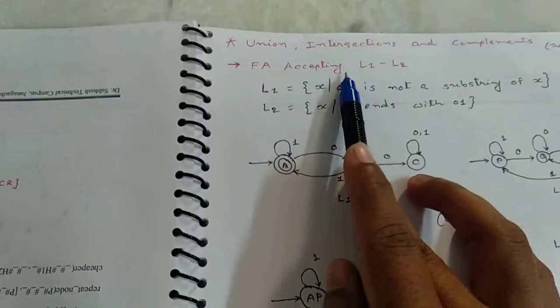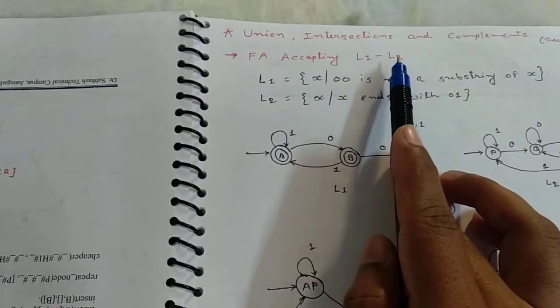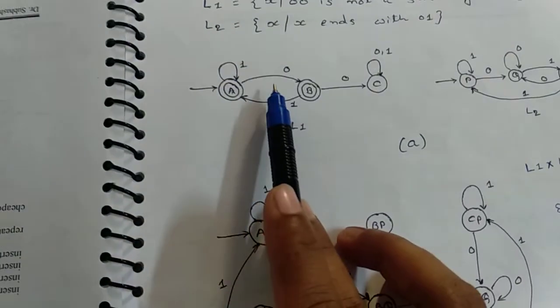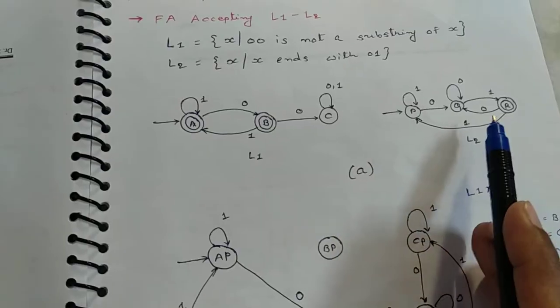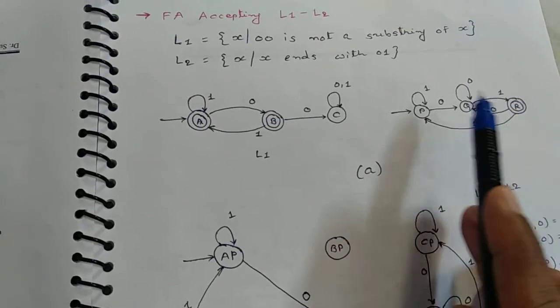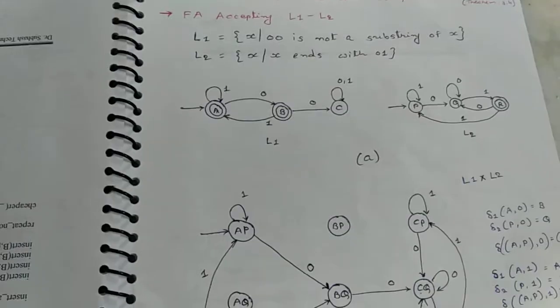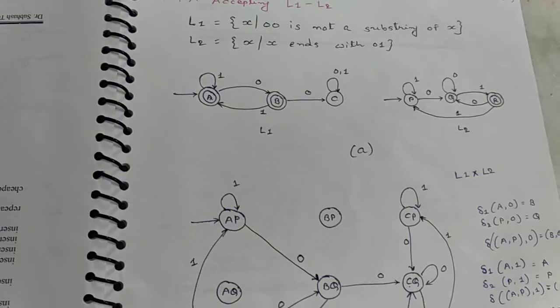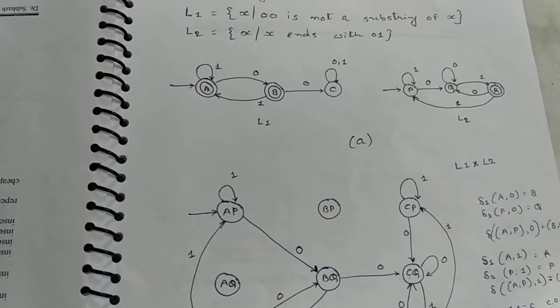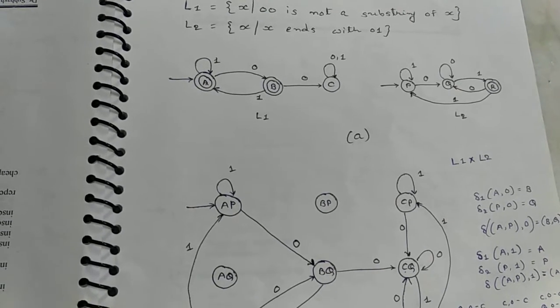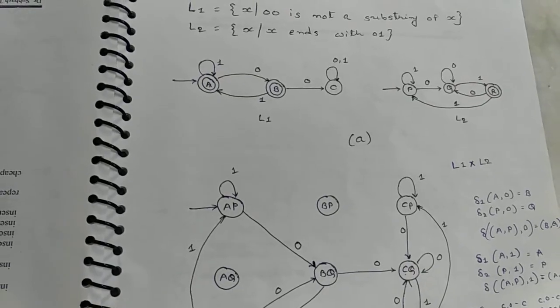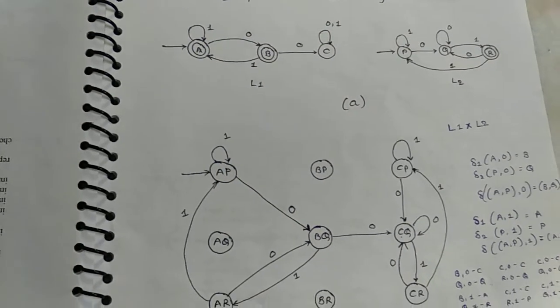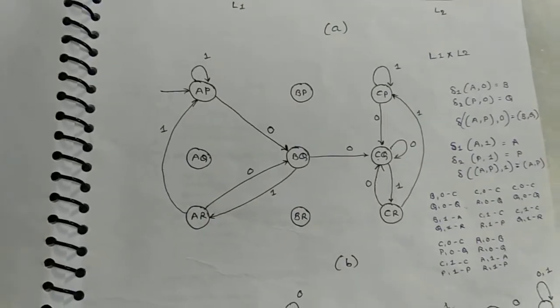For final states, here FA accepting L1 minus L2. In L1 automata, A and B states are final, and L2 automata all states are final. So L1 minus L2 means those states are in L1 but not in L2. So combination of A and B but not R is the final state for L1 minus L2.